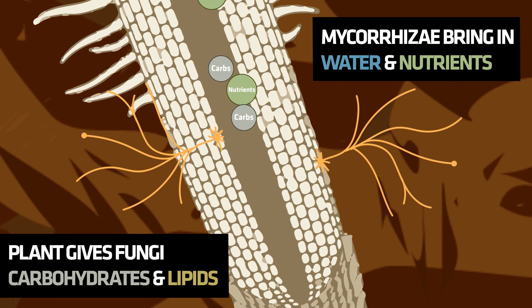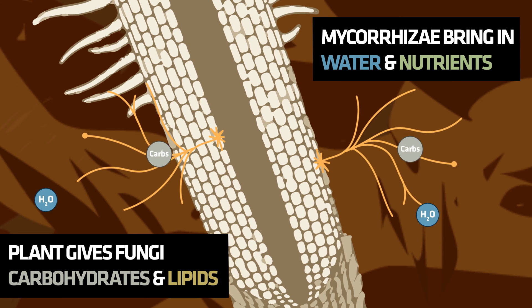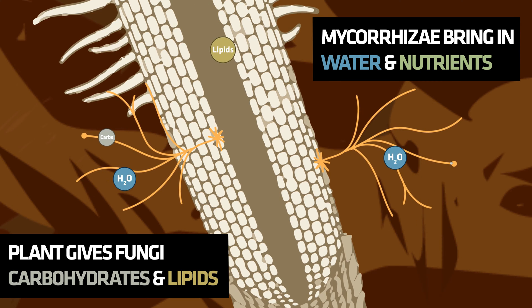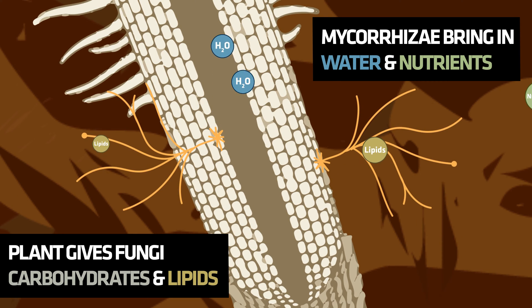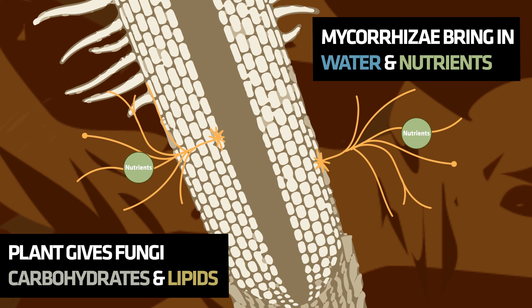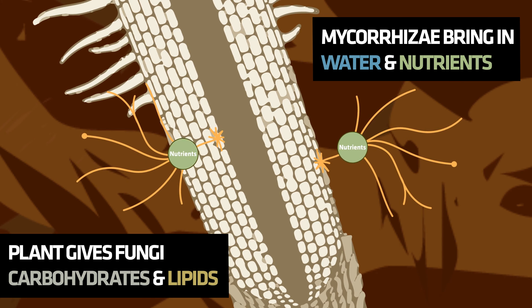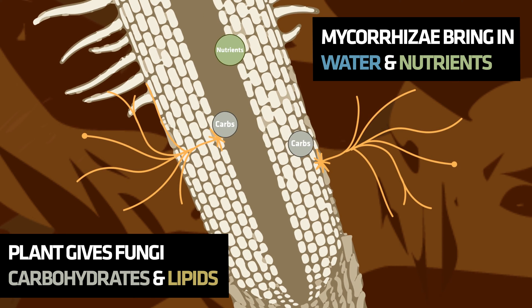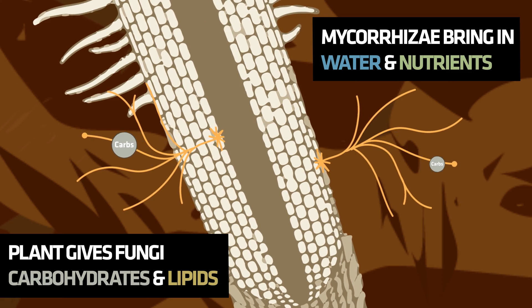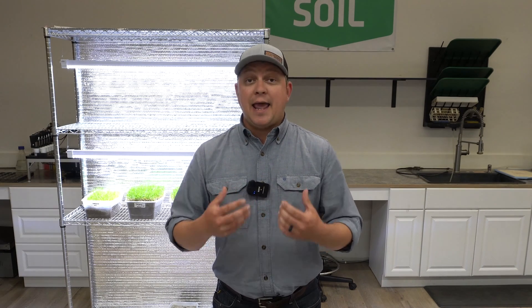So what are the plants getting from this relationship? Well, when we have a good inoculation, the mycorrhizal fungi act as an extension of that root zone. They're very small, fine hyphal threads or fungal threads that can get to areas in the soil that your standard root can't. Ultimately, those mycorrhizal fungi enhance the absorptive capacity of that plant, taking in more water and more nutrients.